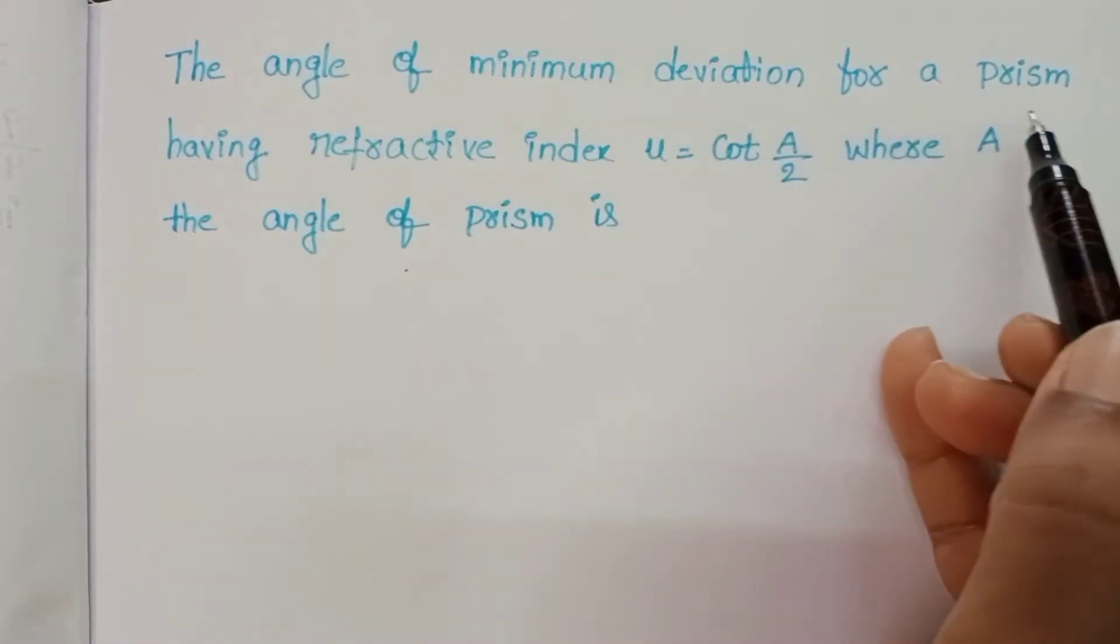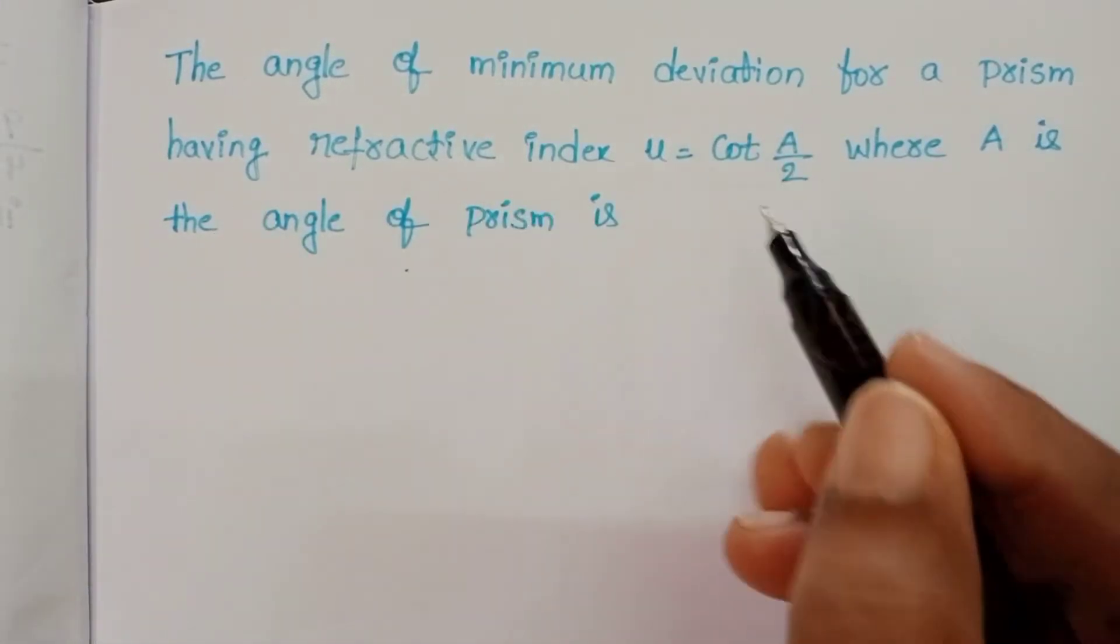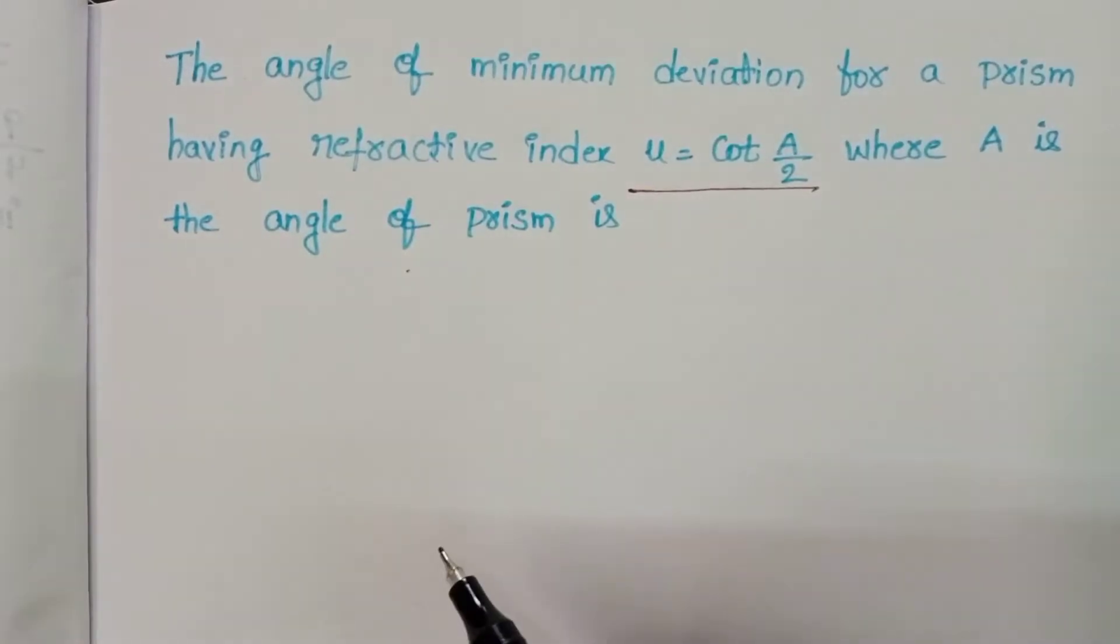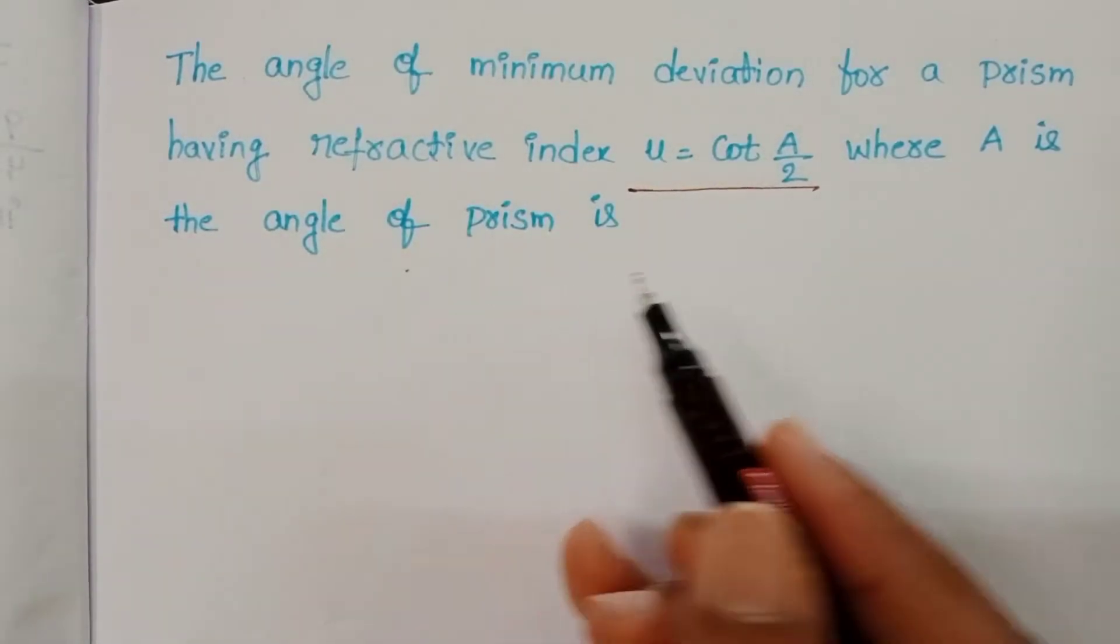The angle of minimum deviation for a prism having refractive index mu equals cot A/2, where A is the angle of prism.